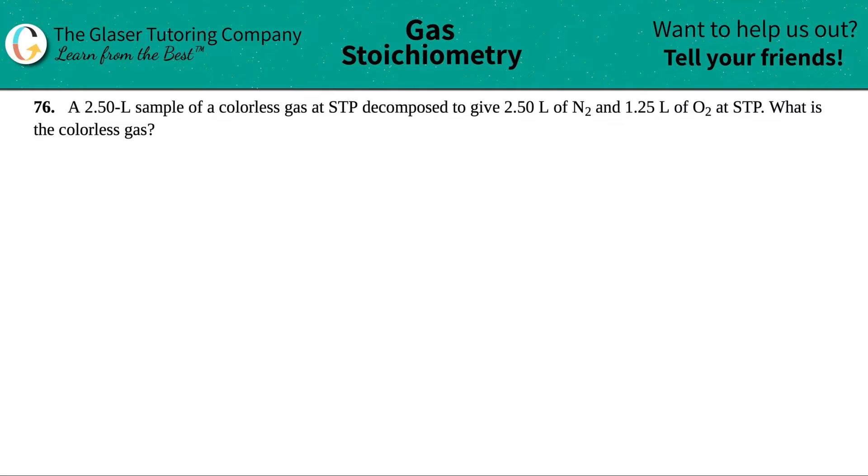Number 76. A 2.50 liter sample of a colorless gas at STP decomposed to give 2.5 liters of N2 and 1.25 liters of O2 at STP. What is the colorless gas?